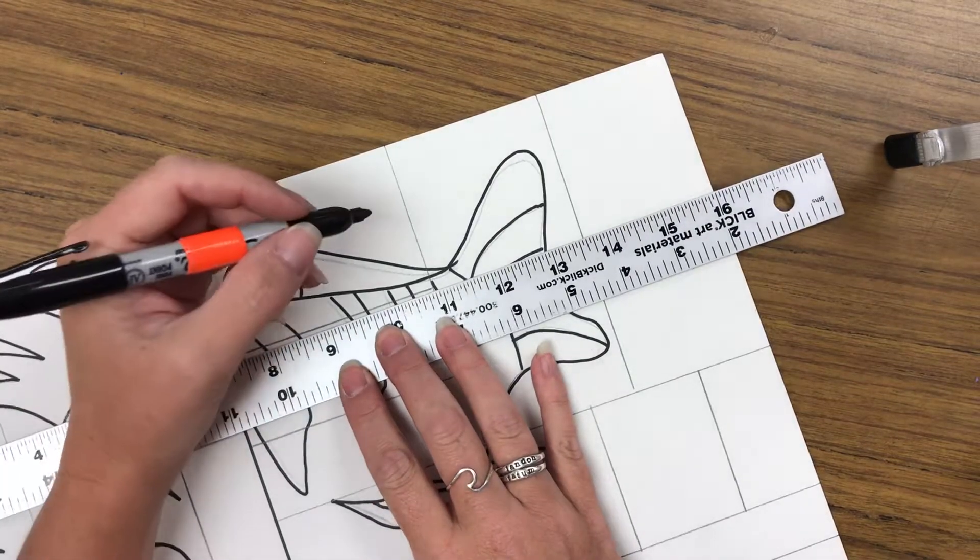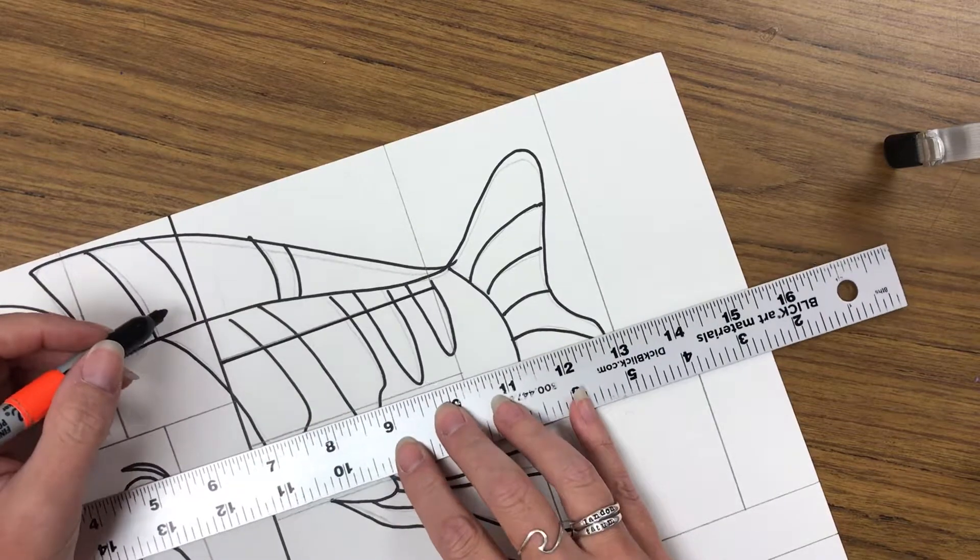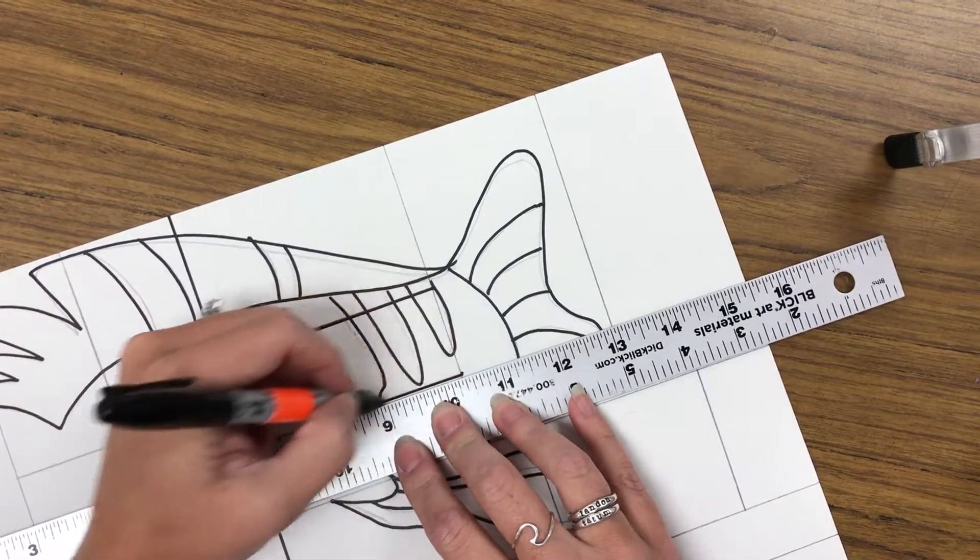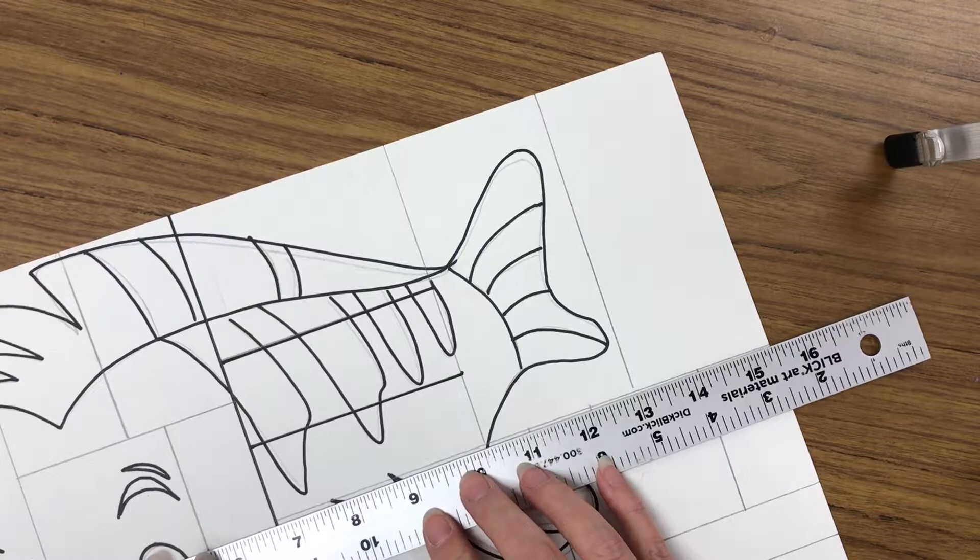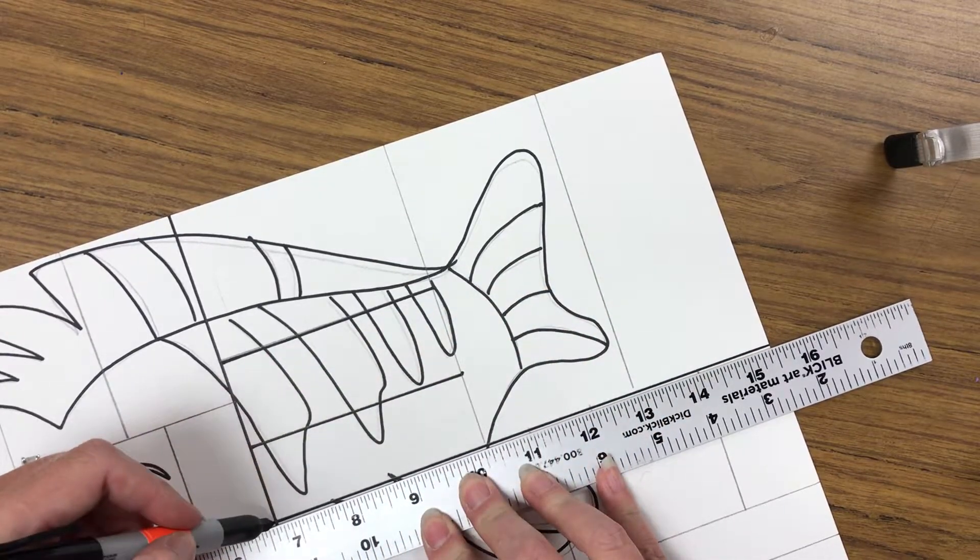But anywhere you have a pencil line, you're going to go back in and trace it with a Sharpie. Make sure that you are using a ruler so that your lines are, in fact, straight. If your lines are not straight, it does not look anywhere near as good.